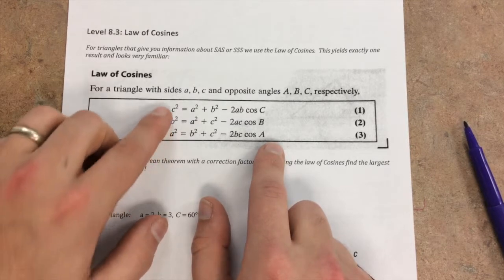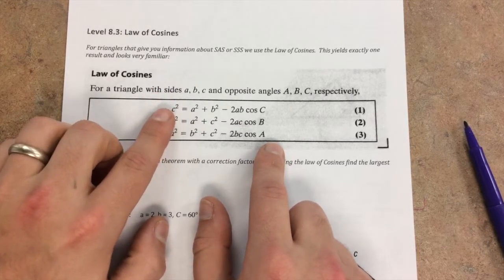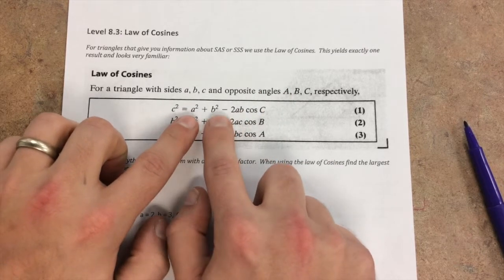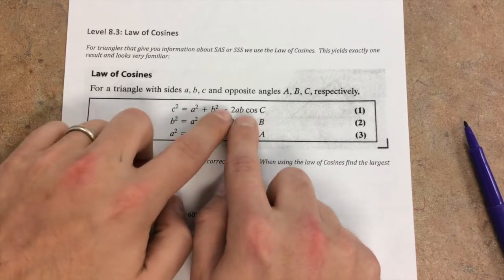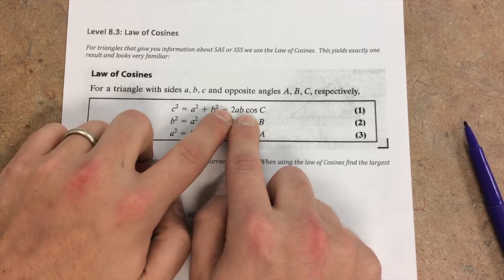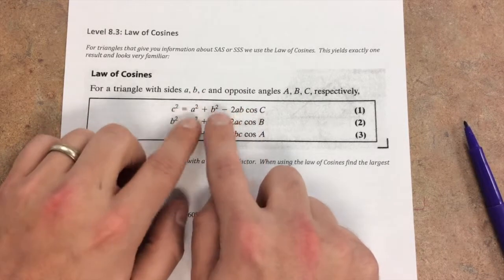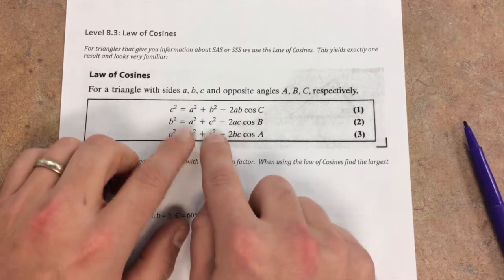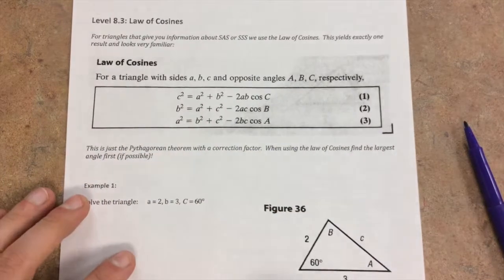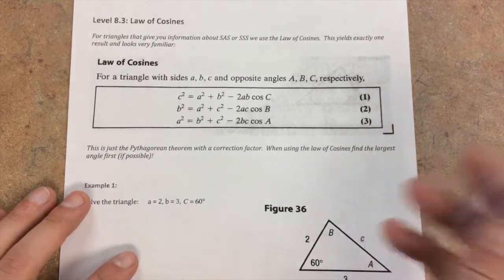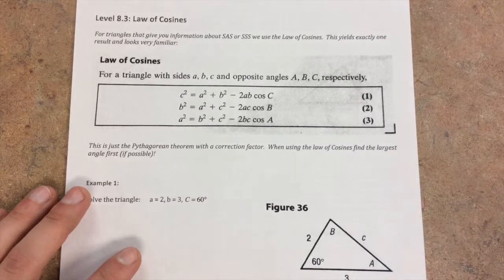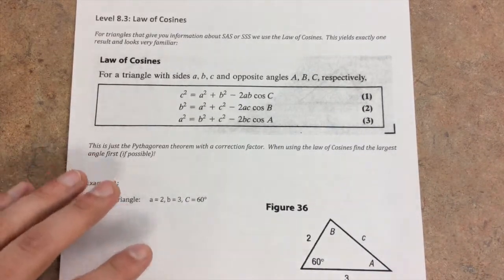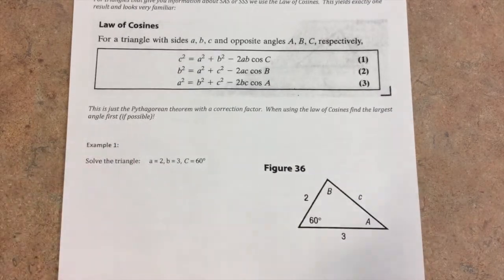If you notice, the side on the left side and the angle that we're finding are on the opposites, and then the numbers that are on the right side are also multiplied by the cosine of that angle. Again, we are only using this formula for side angle side, and then we can go back and use the easier formula with Law of Sines to find out the rest of the information.